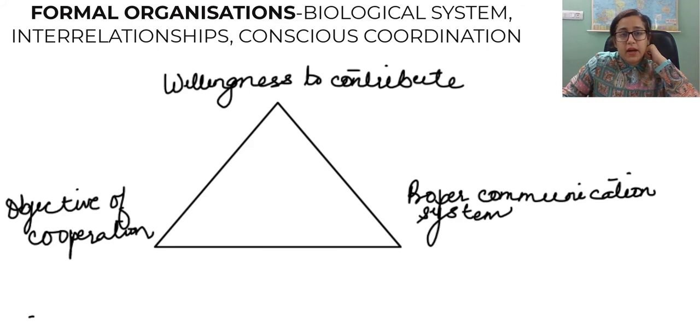So in the theory of formal organization, Chester Barnard says that a formal organization is a biological cooperative system. Please focus on the word biological because it deals with human and therefore the word social systems approach has been used. And it also says that the interrelationships between people who have a conscious coordination for a systematic objective is important. So the interrelationship is important and the conscious coordination is important.